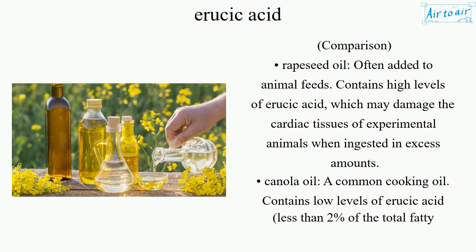Comparison: Rapeseed oil, often added to animal feeds, contains high levels of Erucic Acid, which may damage the cardiac tissues of experimental animals when ingested in excess amounts.